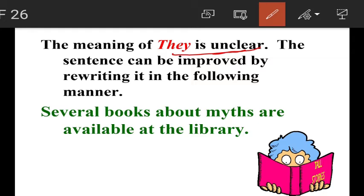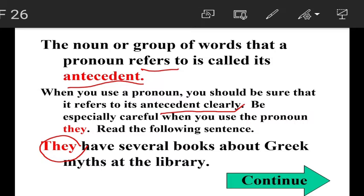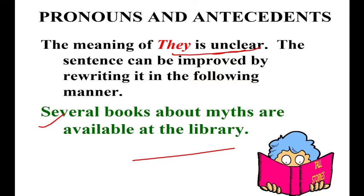The sentence can be improved by rewriting it. Instead of saying 'They have several books about Greek myths at the library,' we can write: 'Several books about myths are available at the library.' This makes the meaning clearer.